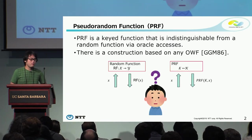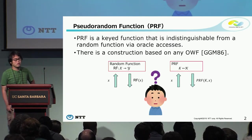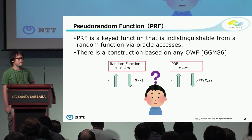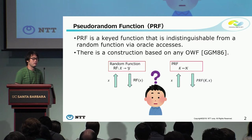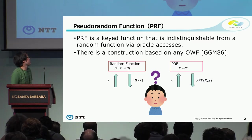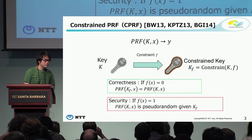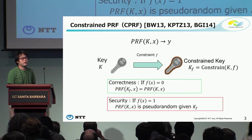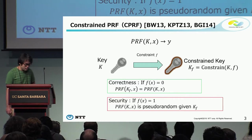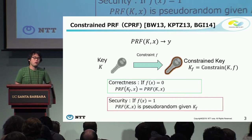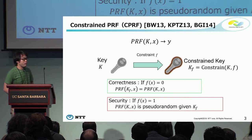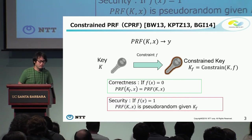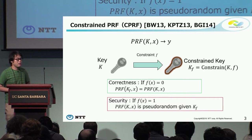The PRF, or pseudorandom function, is a keyed function that is indistinguishable from a random function via oracle access. It is well known that there is a construction based on any one-way function, as shown by Goldreich-Goldwasser-Micali. In recent work, an extension called a constrained PRF has been considered. In a constrained PRF, we can constrain PRF key K by a constraint F, which defines some predicate, to generate a constrained key K_F.